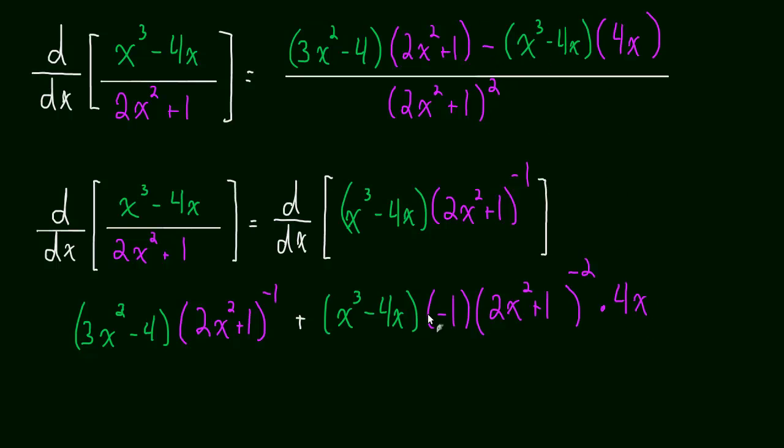And if you're looking at these two things, they do have a lot of similarities. Now, we can simplify this a little bit. Let's simplify this. So, this term becomes 3x squared minus 4 divided by 2x squared plus 1. So, that negative 1 exponent just goes away. And then we're adding,